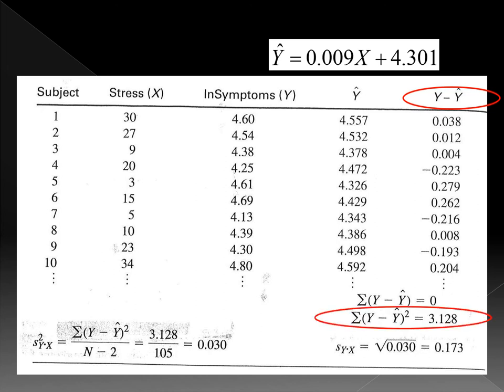Then you do the residual for each y, each predicted y. Then you square these residuals, then you add them together. You will have 3.128. This is called sum of the squares for residuals.